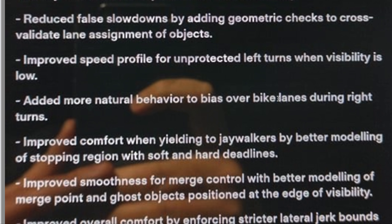Reduced false slowdowns by adding geometric checks to cross-validate lane assignment of objects. Humans look at a lane as kind of a trapezoid going off into the distance and geometrically fit that with perspective. Essentially the car is doing something similar — it's learning geometry at a basic level, then cross-validating the lane assignment of objects, figuring out what lane you're in and what lane everybody else is in using geometry. This reduces false slowdowns because it doesn't think people are in your lane when they're not.